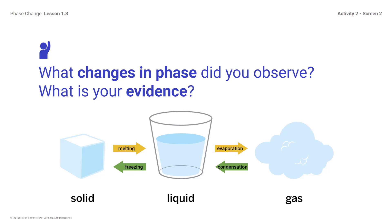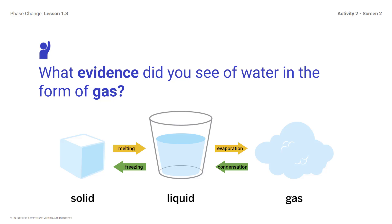Water drops appeared on the clear cup, which must have been water vapor condensing to liquid water. Water vapor must have come from somewhere — liquid water in the foam cup evaporated. What evidence did you see of water in the form of gas? You might respond: mist, steam, or water vapor rising from the hot liquid in the cup. If water condensed on the side of the plastic cup, it must have condensed from water gas found in the air.